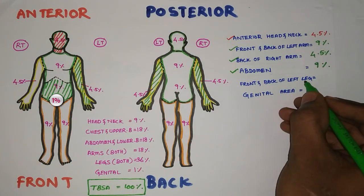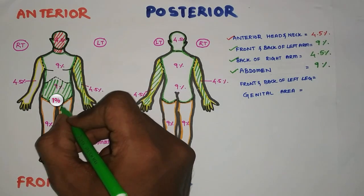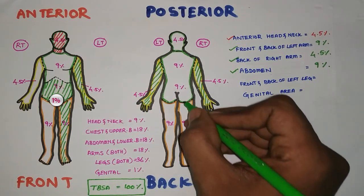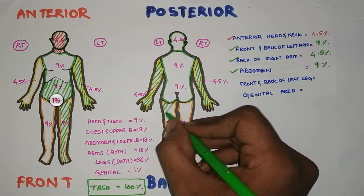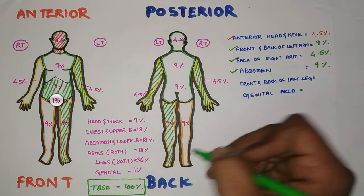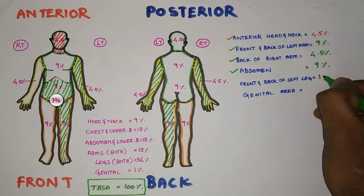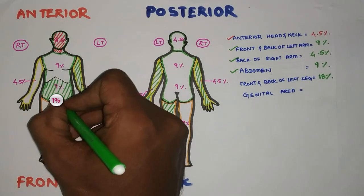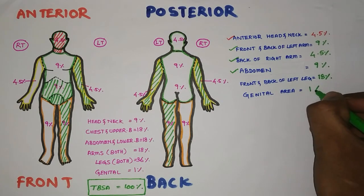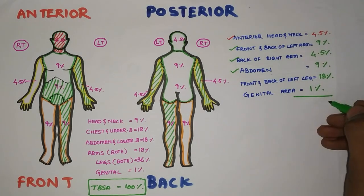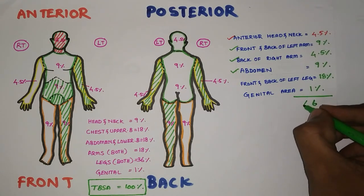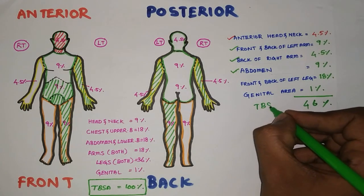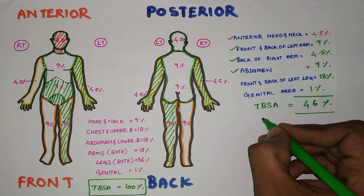Next, front and back of the left leg: the front left leg is 9% and the back of the left leg is also 9%, so totally 9 plus 9 equals 18%. And the genital area is 1%. So adding all together: 4.5 + 9 + 4.5 + 9 + 18 + 1 = 46%. This is the total body surface area burned on that particular client.